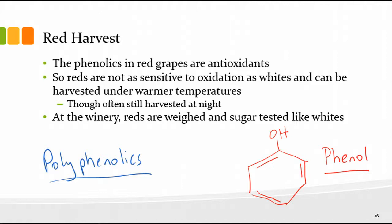When you link phenolic compounds together you polymerize them to make large molecular structures — you've probably heard about polymerizing tannins to make large tannins. When we polymerize phenol molecules we make polyphenolics. Phenolic compounds are in the skins of grapes, and we ferment reds in contact with the skins in order to extract a lot of those phenolic compounds.